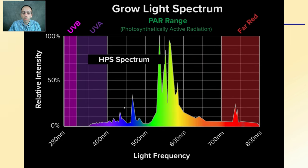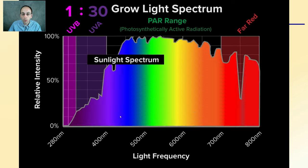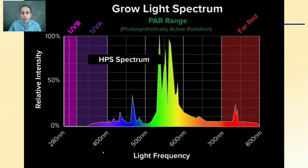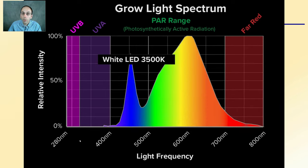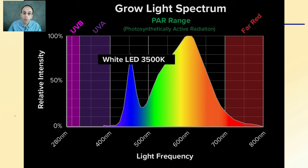If we go to the high pressure sodium spectrum and compare it back and forth with sunlight, we're seeing a massive change in the amount of light frequency produced by the HPS spectrum. We also have a grow light spectrum from white LEDs producing 3,500 Kelvin. These comparisons show what spectrum is being produced by these lights, but you should always check with your specific light bulb — the manufacturer should be able to provide you with one of these spectrum graphs.